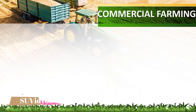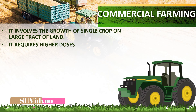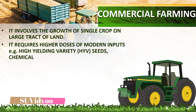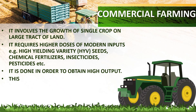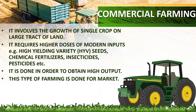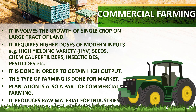Commercial farming involves the growth of a single crop on a large tract of land. It requires higher doses of modern inputs, e.g., high yielding variety of seeds, chemical fertilizers, insecticides, pesticides, etc., in order to obtain high output. This type of farming is done for the market. Plantation is also a part of commercial farming and it produces raw materials for industries.